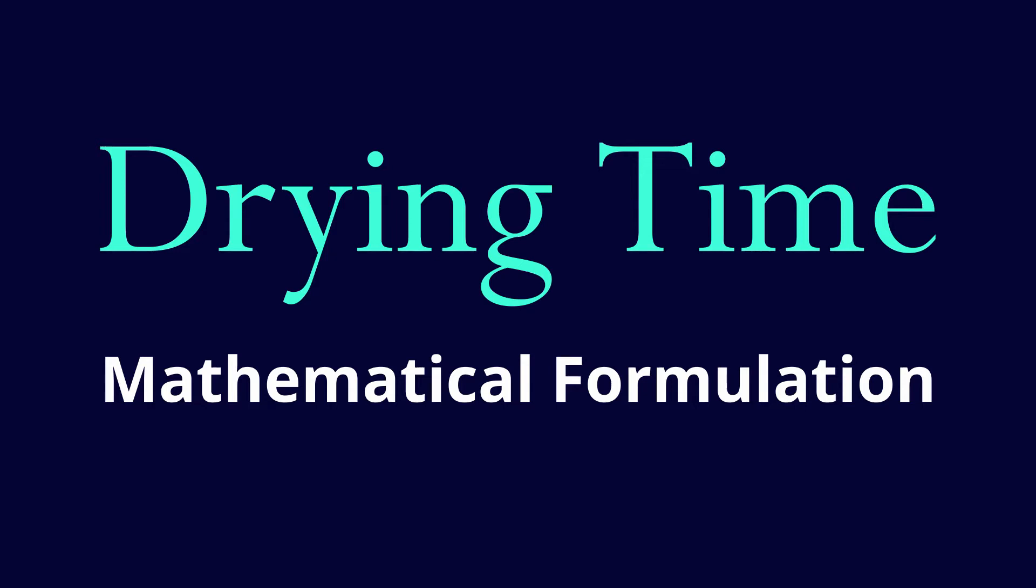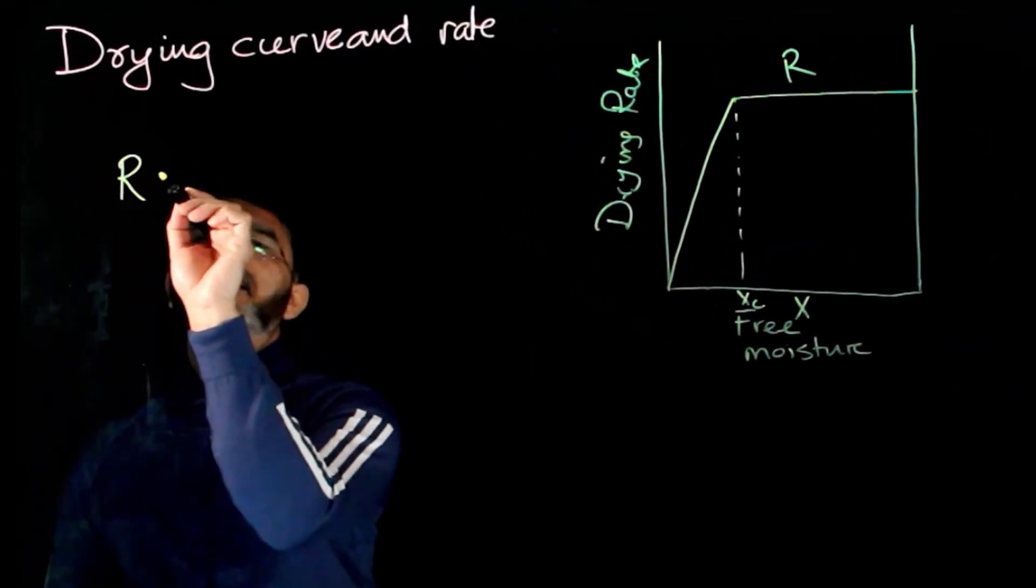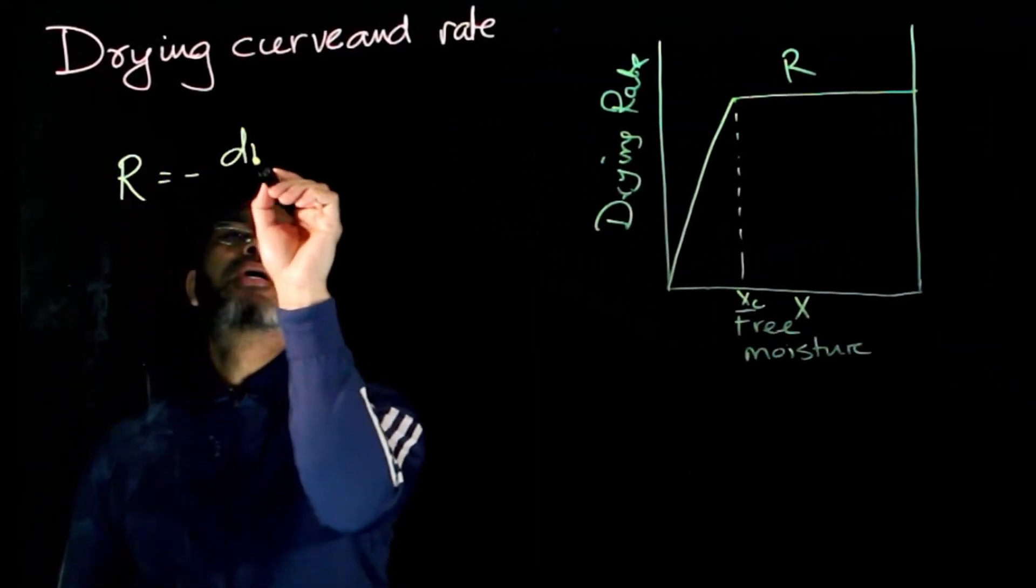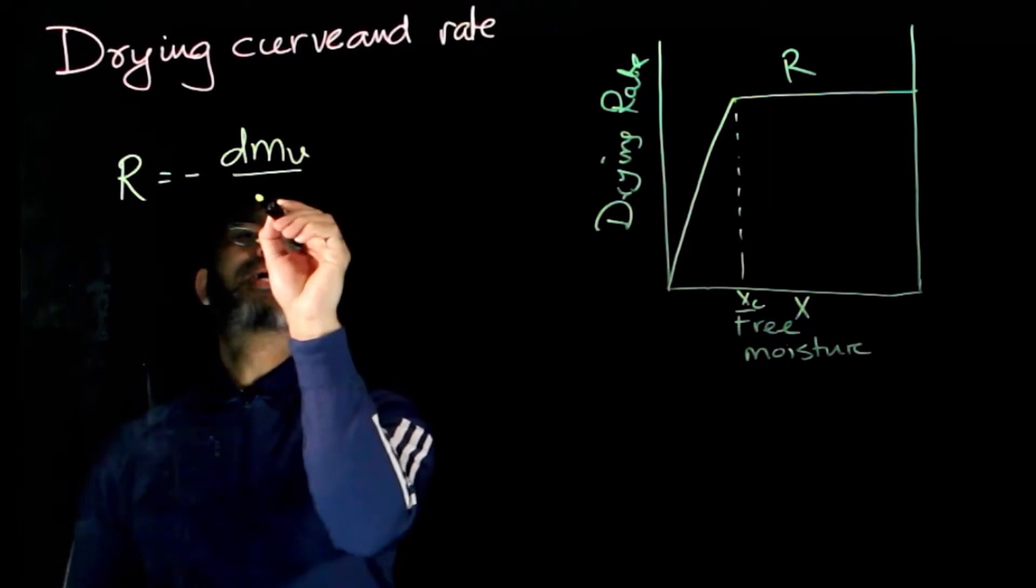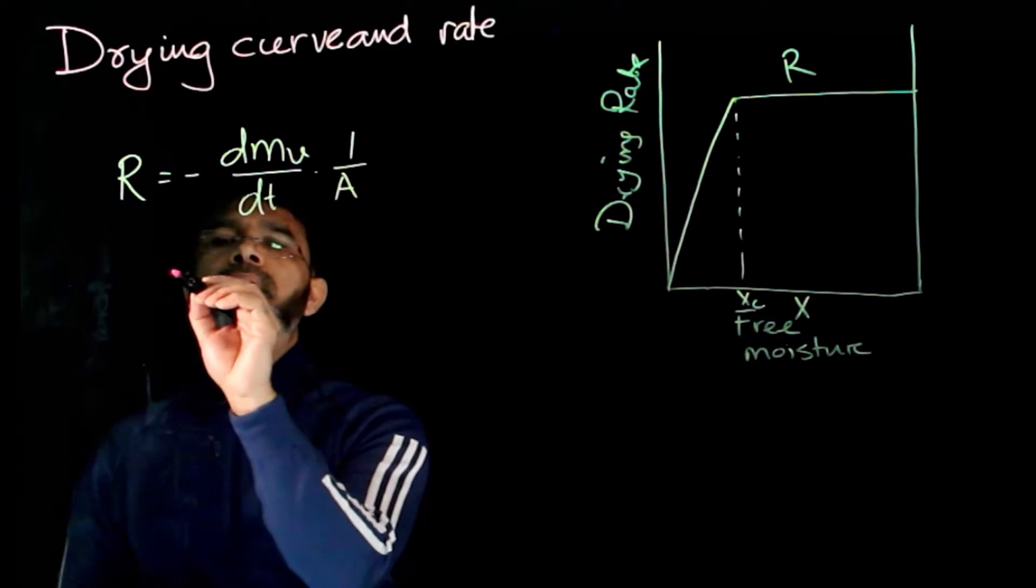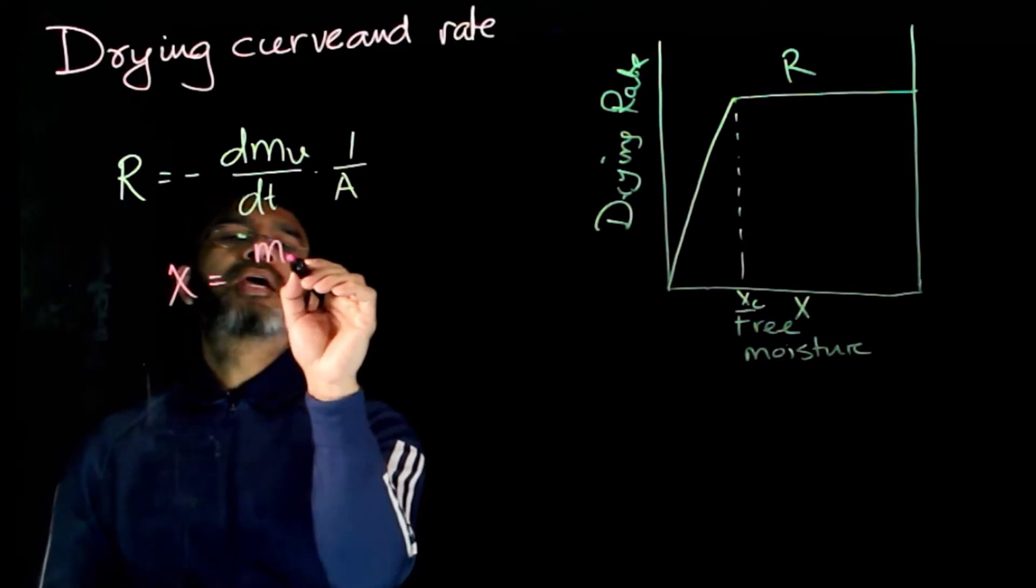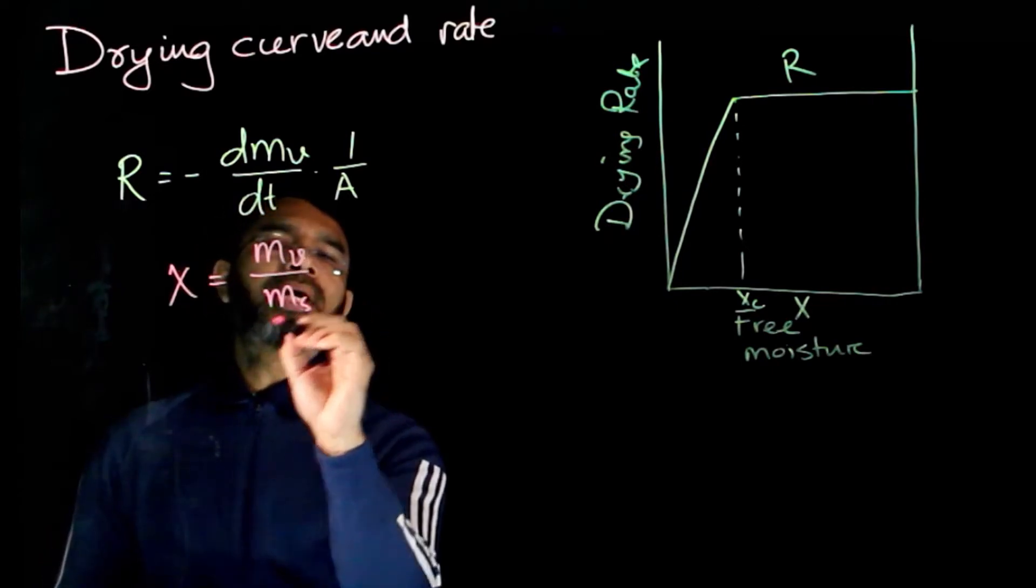In this session, we derived the expression for drying time. Now, we know the expression for drying rate is given as negative dmv over dt times 1 over a. The mass ratio of vapor is defined as mv over m of the solid.